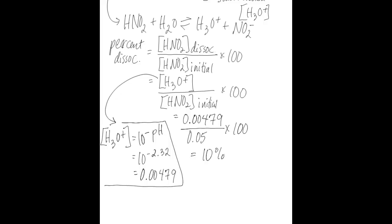There are two trends to be aware of when thinking about dissociation of acids. First, percent dissociation increases with increasing Ka values. The higher the Ka value, the higher the percent dissociation.